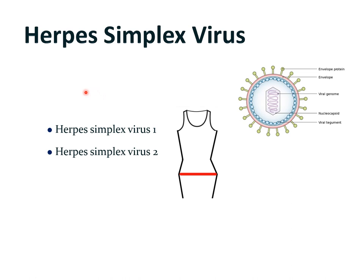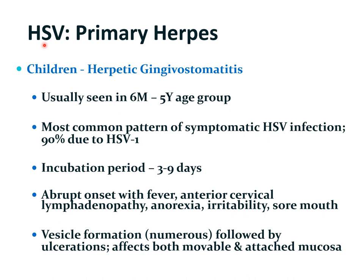There are two main types of herpes simplex viruses: type 1 which generally causes infections above the waistline, and type 2 which causes infections below the waistline. However, with changing sexual behaviors and oral sexual practices, it is possible for type 2 herpes simplex virus to involve organs and tissues above the waistline and vice versa for type 1. The initial infection by herpes simplex virus is known as primary herpes, and its pattern differs in children and adults.